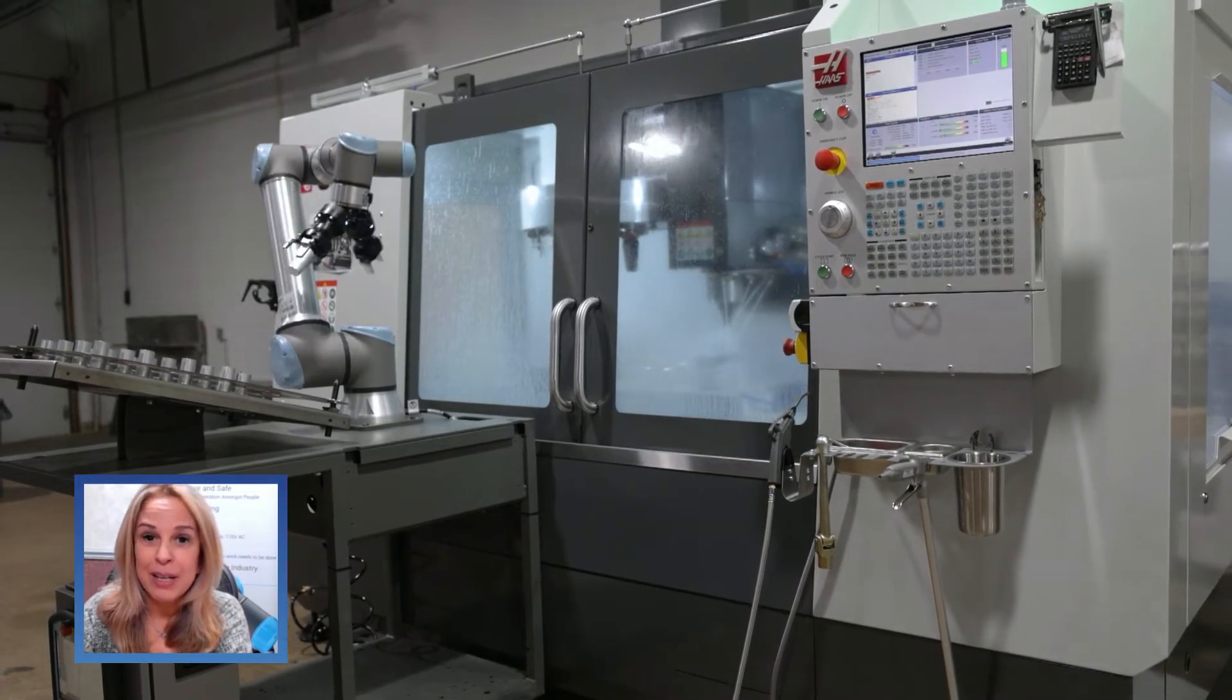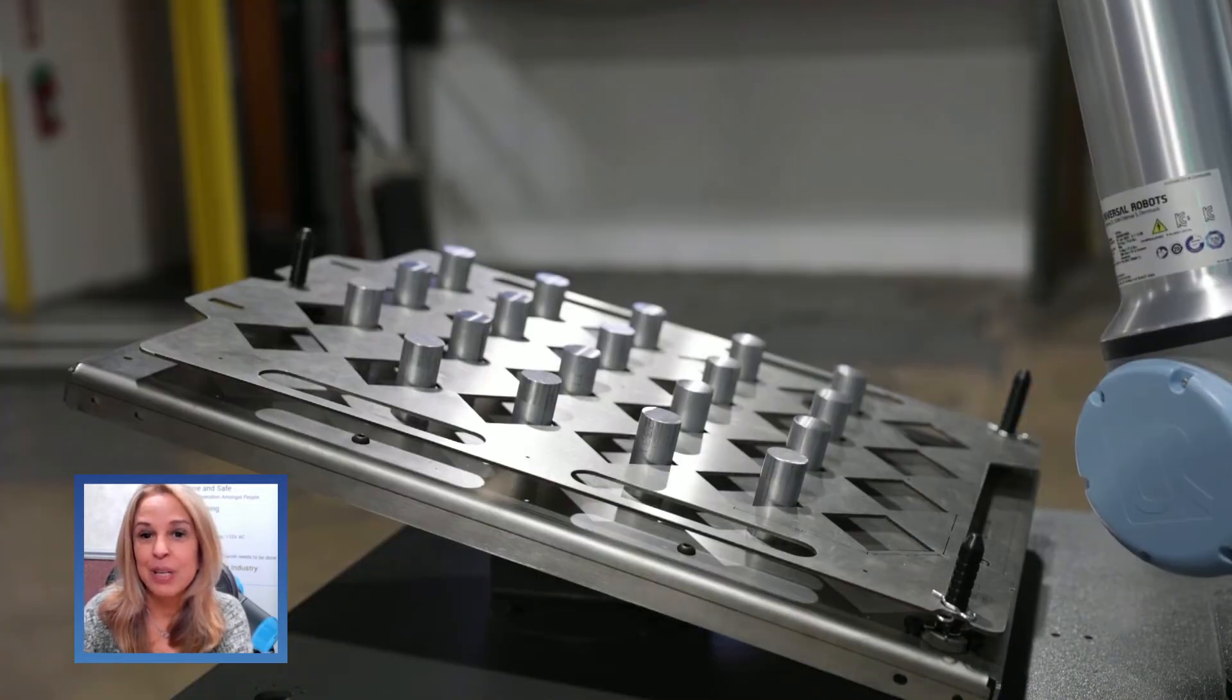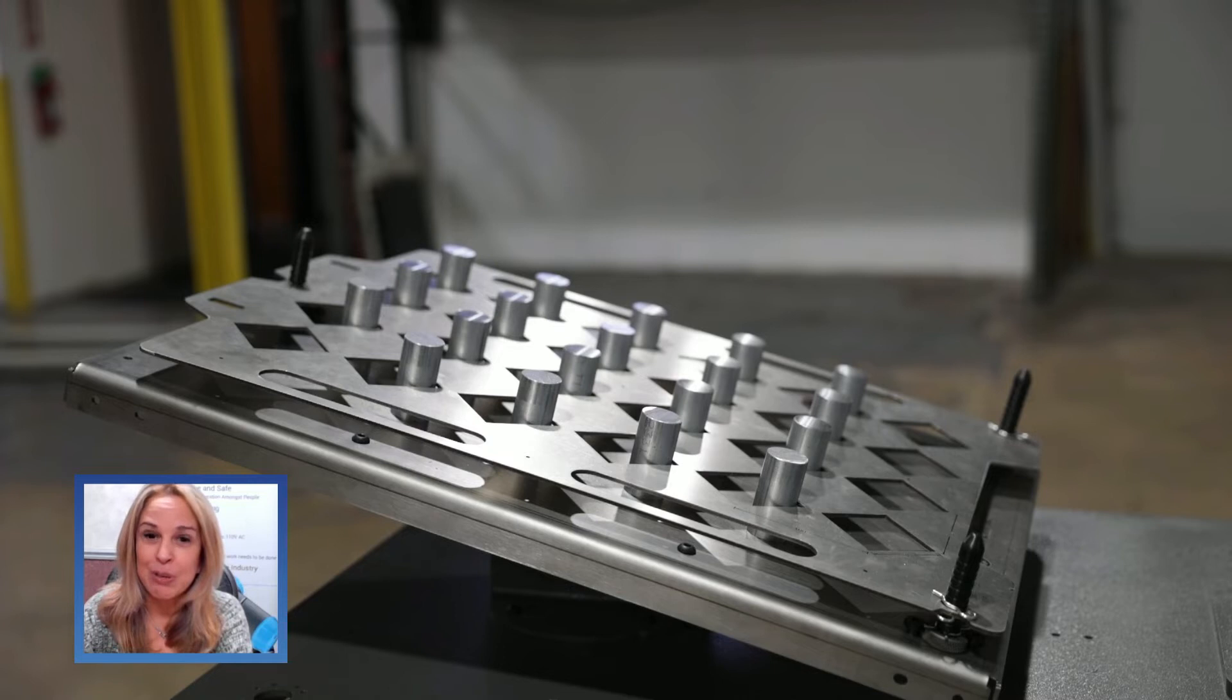In the world of collaborative robotics, machine tending is high on the list. It's a proven, effective way to get the most out of your collaborative robot.